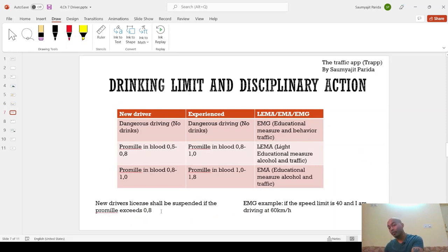Coming to drinking limit and disciplinary action if you are caught. So, I will start from the bottom. If promil in blood is in range of 0.8 to 1 for a new driver or for an experienced driver from 1 to 1.8, one has to mug up these limits. It is very important to understand and mug up this limit because one can expect a question from here in the exam. So, promil in blood for a new driver is 0.8 to 1 or for an experienced driver from 1 to 1.8, then the type of disciplinary action that can be imposed is educational measure, alcohol and traffic.